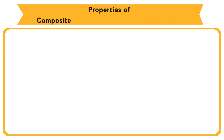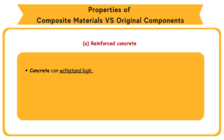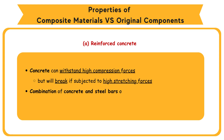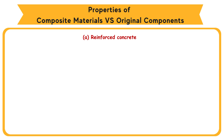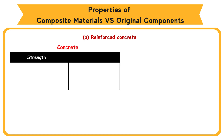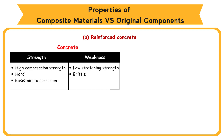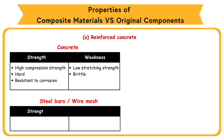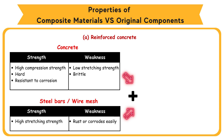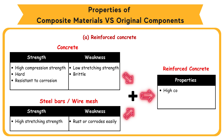Comparison of properties of composite materials and their original components. A: Reinforced concrete. Concrete can withstand high compression forces but will break if subjected to high stretching forces. Combination of concrete and steel bars or wire mesh can increase the ability of the concrete to withstand compression forces. Concrete strengths: high compression strength, hard, resistant to corrosion. Weakness: low stretching strength, brittle. Steel bars or wire mesh strength: high stretching. Weakness: rust or corrodes easily. Combined as reinforced concrete, properties become: high compression strength, high stretching strength, and resistant to corrosion.